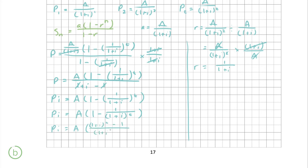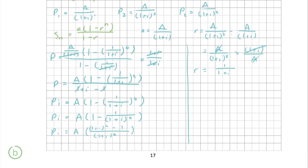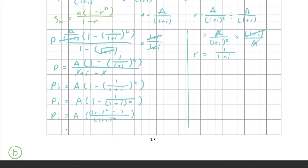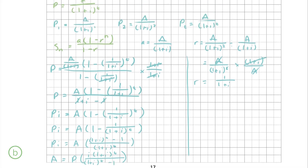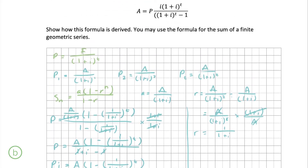Now we want to get a on its own, so we divide across by the entire fraction — which is the same as multiplying by the inverse. We finally get a = p·i·(1 + i)^t all over [(1 + i)^t − 1], which is exactly the same as the amortization formula we were given in the question.